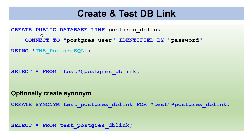Optionally, create a synonym. To create the DB link, you can create a public or private link — that's your choice. For example: CREATE PUBLIC DATABASE LINK link_name CONNECT TO username — a user with access on the PostgreSQL database — IDENTIFIED BY password USING 'tns_entry'. At this point the DB link is set up. To access data, run SELECT * FROM test@dblink_name — the '@' indicates you are going over the DB link. It will connect to PostgreSQL and retrieve the data. Optionally, create a synonym using CREATE SYNONYM so you can select from the synonym without specifying the DB link name each time.